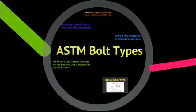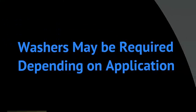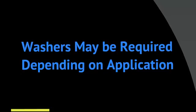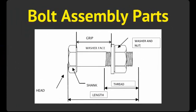ASTM bolt types are headed externally threaded fasteners intended to be used with a nut. ASTM A325 and ASTM A490 bolts are called high strength bolts. Washers may be required depending on the application. The shank is only partially threaded and threaded length depends on the bolt diameter. Bolt assembly parts include the grip, washer and nut, thread, length, shank, head, and washer face.